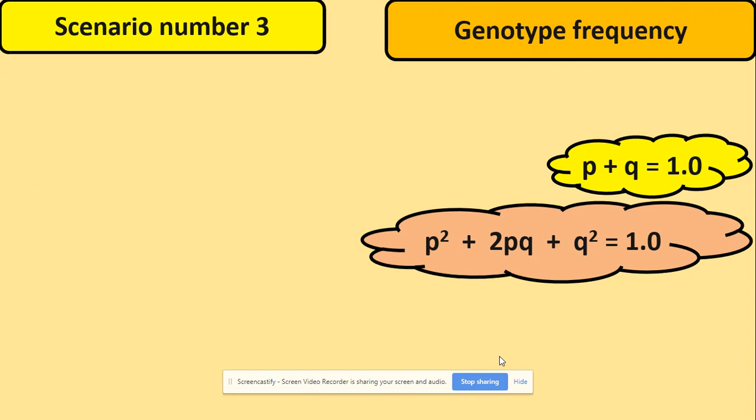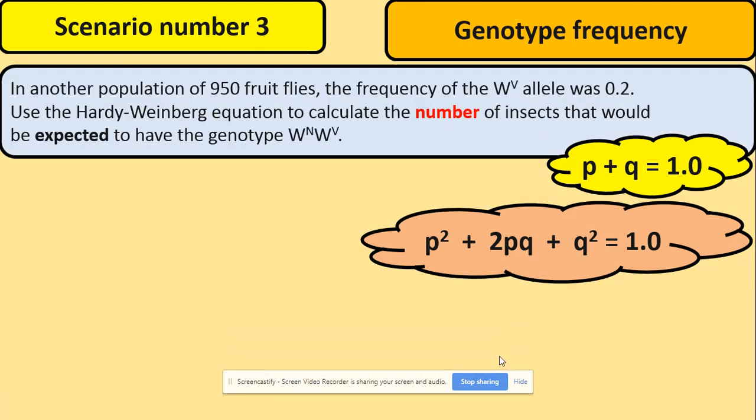Let's have a look at scenario number three when they're asking for the genotypes. So you've got another population of fruit flies, it's 950 this time, and they've given you frequency of the allele of 0.2. And they would like you to use the Hardy-Weinberg equation to calculate the number of insects that would have this genotype here.